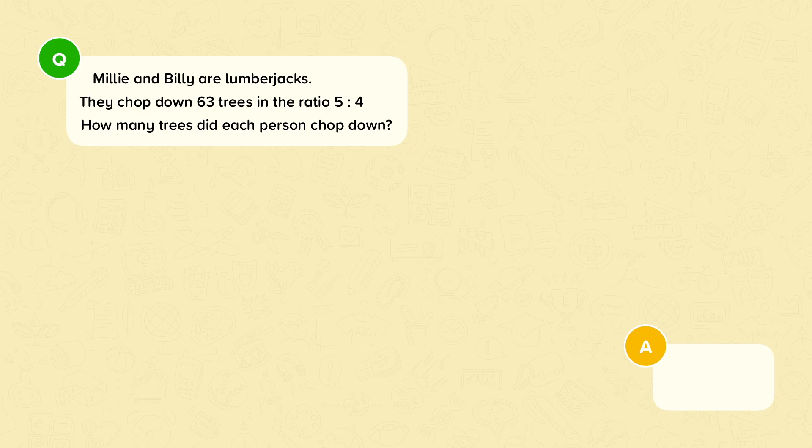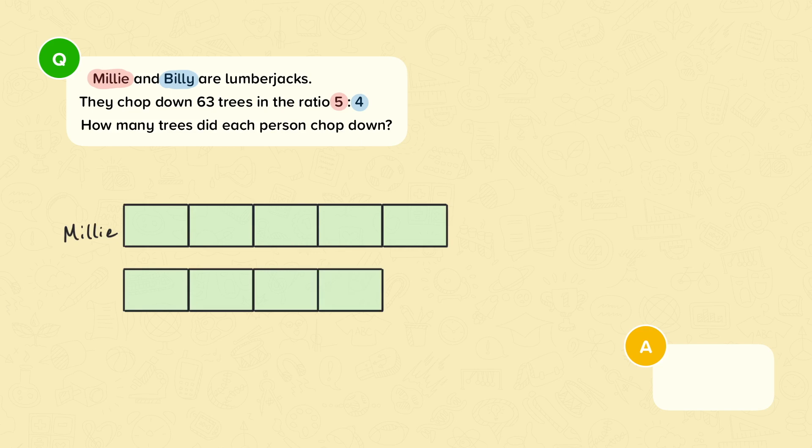So we'll start by drawing out the ratio. Millie will have five parts and Billy will have four parts. So we draw five equal bars for Millie and label it. We draw four equal bars for Billy and label it. And we're told that the total amount of trees cut down is 63. So all of these parts together is equal to 63.